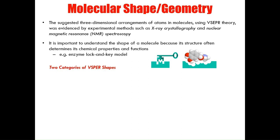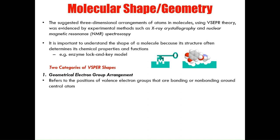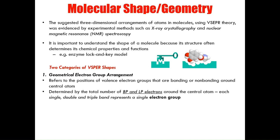There are two main categories for VSEPR shapes. The first category is the geometrical electron group arrangement. These shapes are based on the position of valence electron groups that are bonding or non-bonding around the central atom. Each single, double, and triple bond is treated the same — every kind of bond is considered to be a single group of electrons. Because this category is concerned with the arrangement of electrons, not the bonded atoms, it is often considered a broad classification under which compounds can be subdivided into molecular shapes.